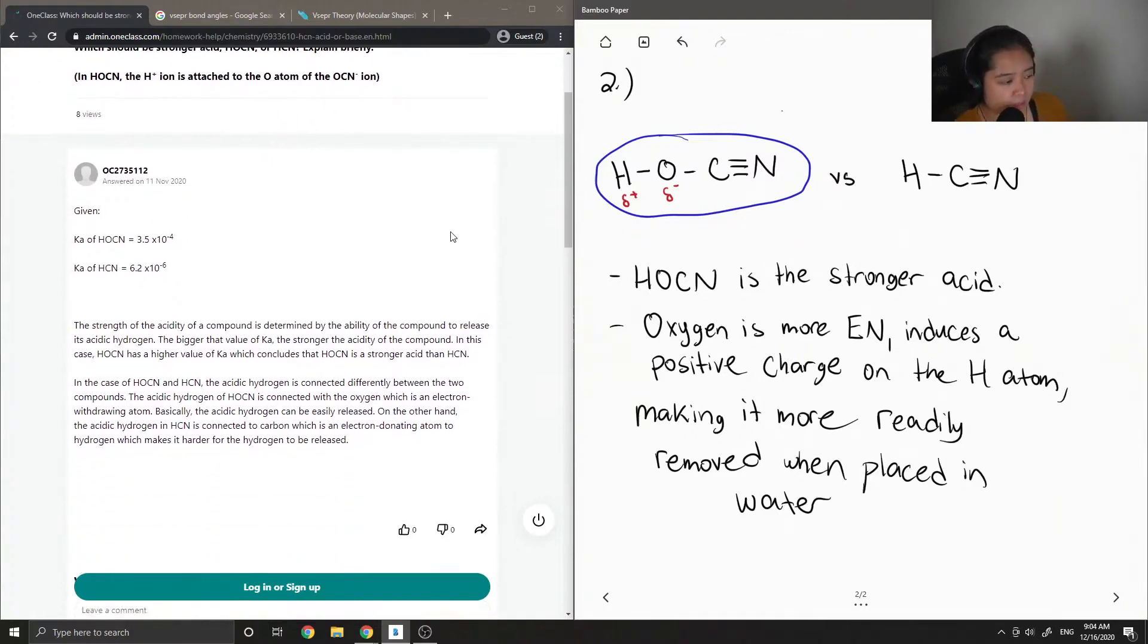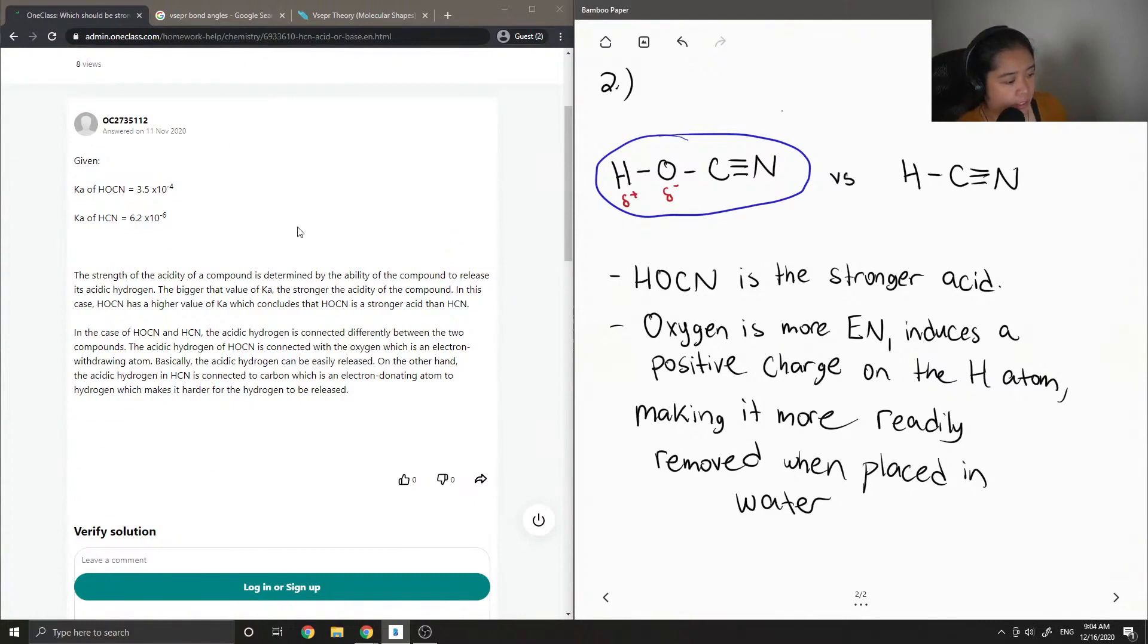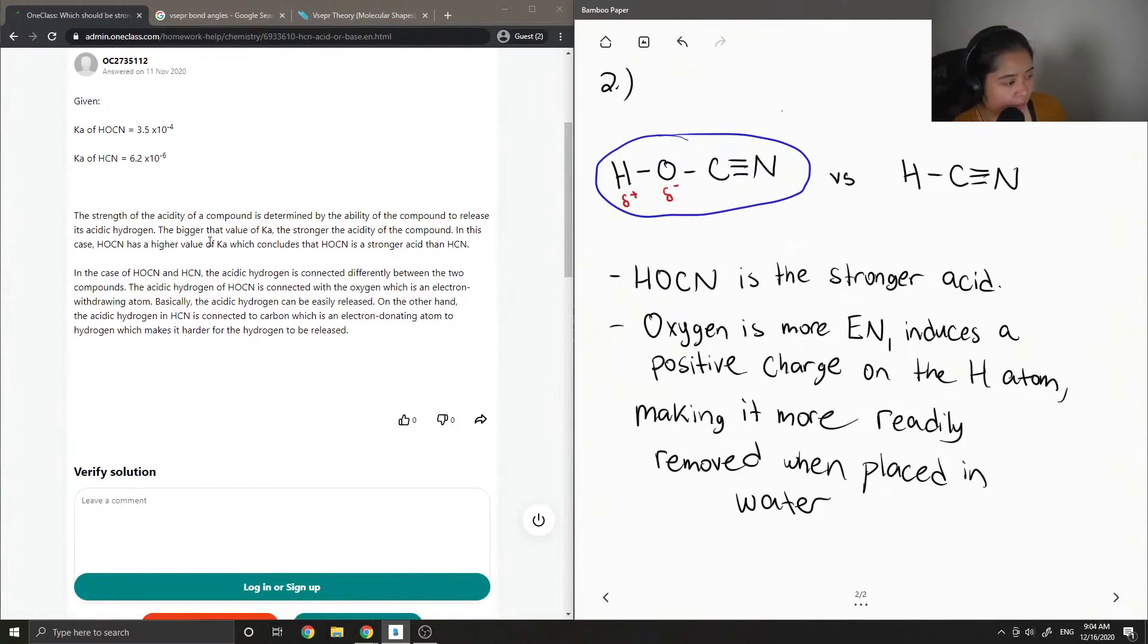Okay, so let's see what the junior tutor said. They use a different approach using the Ka values. Ka is the acid dissociation constant. The strength of the acidity of a compound is determined by the ability of the compound to release its acidic hydrogen. That's correct. And the bigger that value of Ka, the stronger the acidity of the compound.